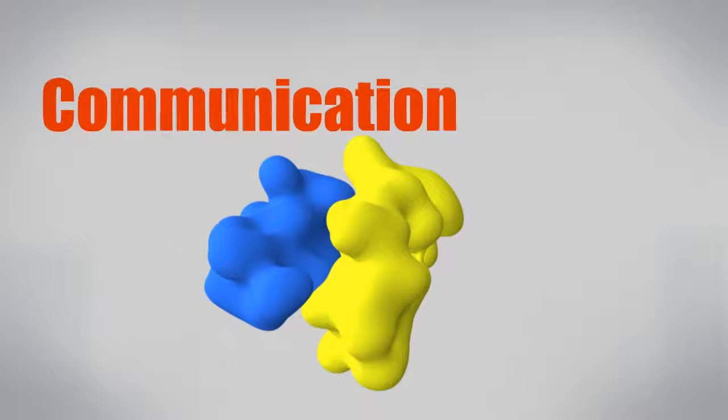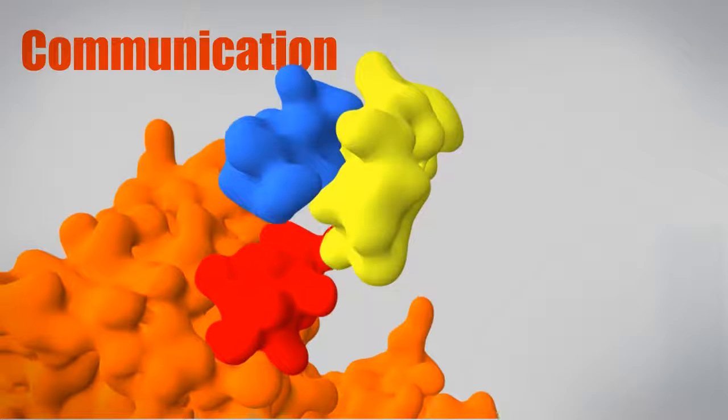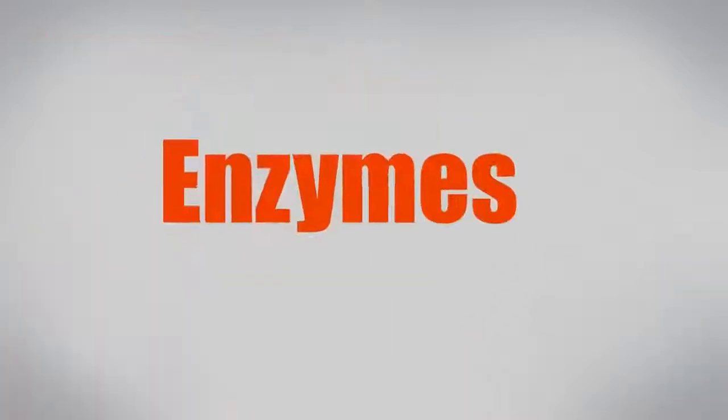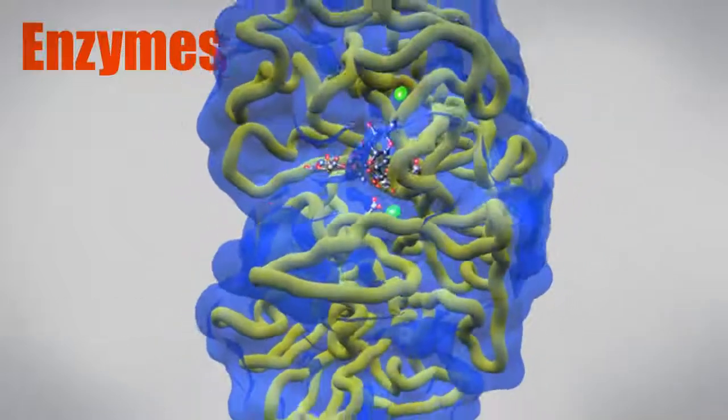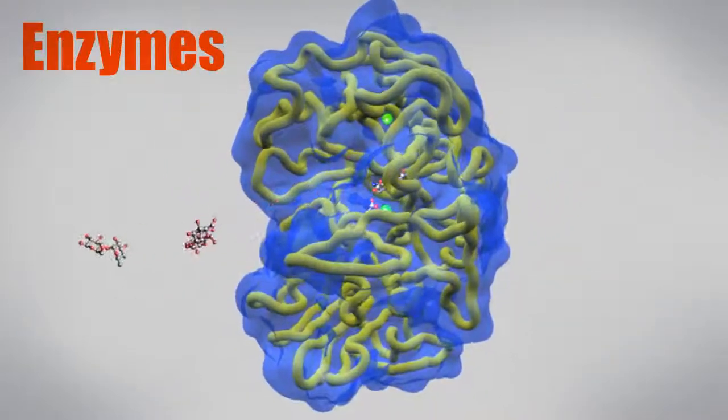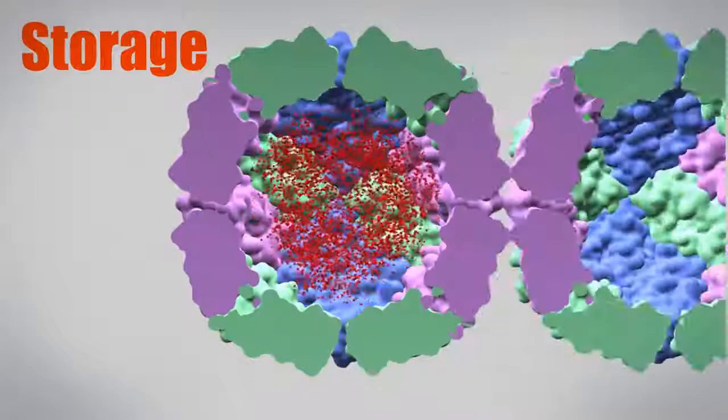The hormone insulin is a small, stable protein that can easily maintain its shape while traveling through the blood to regulate blood sugar levels. Alpha amylase is an enzyme with a catalytic site that begins the breakdown of carbohydrates in our saliva. Ferritin forms a hollow shell that stores iron from our food.